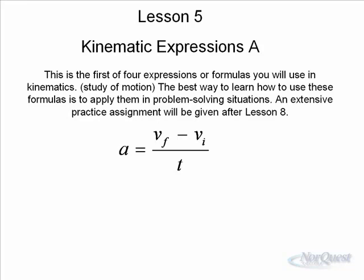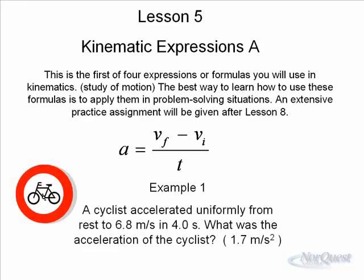This first example is quite an easy one. It doesn't involve any formula manipulation, doesn't involve anything really that difficult other than substitution and understanding what you're reading. Here's a cyclist. A cyclist accelerated uniformly from rest. What does that mean, rest? Rest means you're not moving. That means that the cyclist's initial velocity must have been zero. So already you know that vi equals zero, which you would substitute into that top formula.